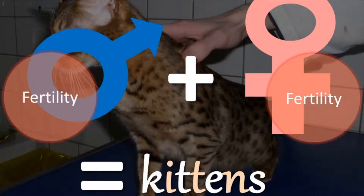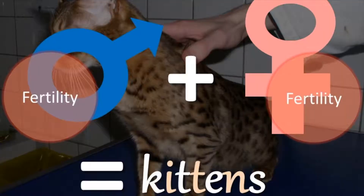Let's focus on the male for a moment. We want the male to produce healthy spermatozoa. We want the male to produce enough spermatozoa to ensure fertilization. We want the male to produce motile spermatozoa. And for the queen, we want her to produce fertilizable oocytes — what we call eggs — that will be fertilized by the spermatozoa.